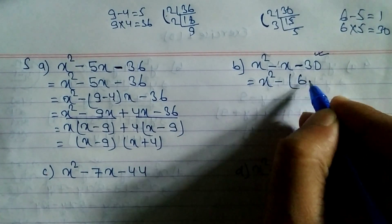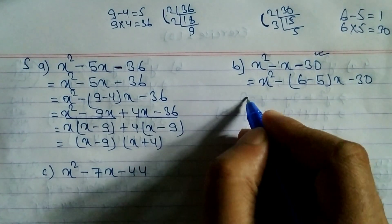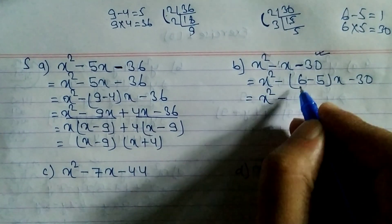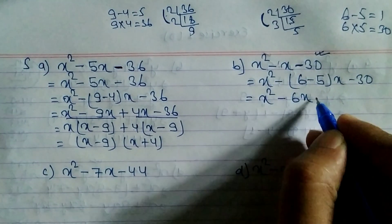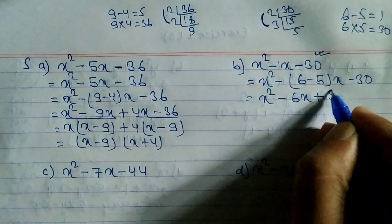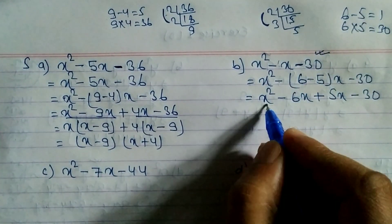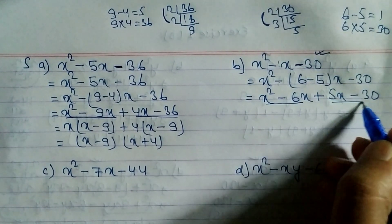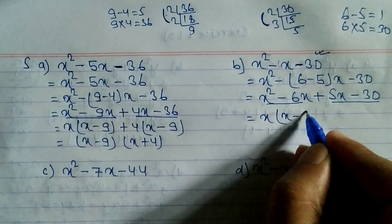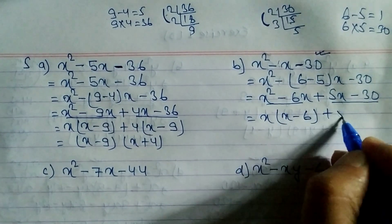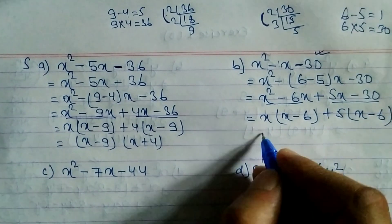Now open the bracket: x² - 6x + 5x - 30. From the first two terms, x is common, giving x(x - 6). From the last two terms, 5 is common, giving 5(x - 6).